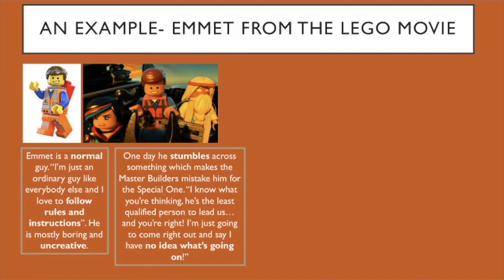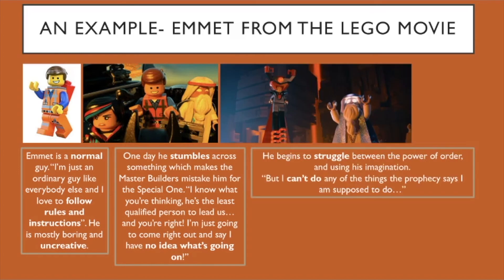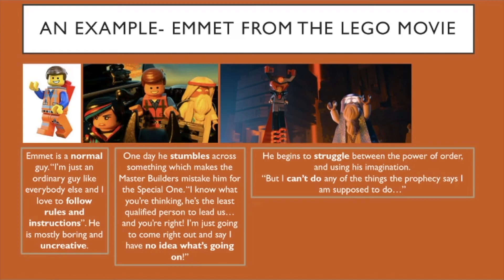One day Emmet stumbles across something which makes the master builders mistake him for a special one. He says, 'I know what you're thinking — he's the least qualified person to lead us, and you're right. I have no idea what's going on.' The video said the anti-hero might accidentally save the day — in this case he accidentally stumbles across something really important, so they think he's a genius, but it was an accident. He begins to struggle between the power of order — following the instructions and rules — and the idea of imagination: can he be unique and creative? He says, 'I can't do any of the things the prophecy says I'm supposed to do.' He speaks to Lord Business and convinces him it's okay to build new ideas, saying, 'You don't have to be the bad guy, because you are special and so am I. The prophecy is made up but it's also true — it's about all of us.' By the end he knows: maybe I'm not the bad guy, but maybe I'm not the good guy either.